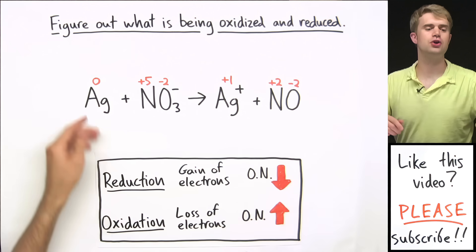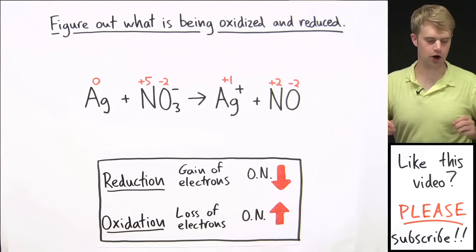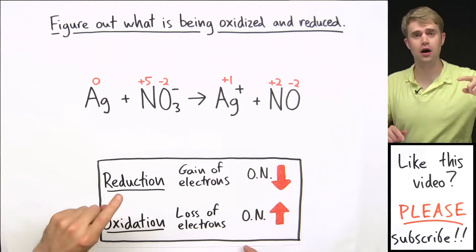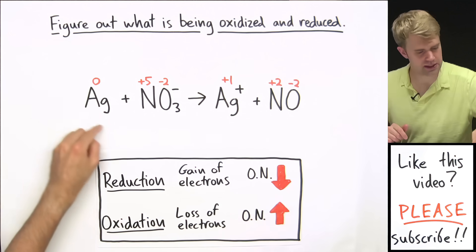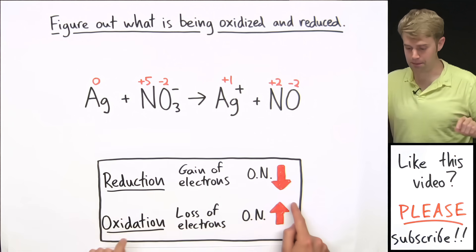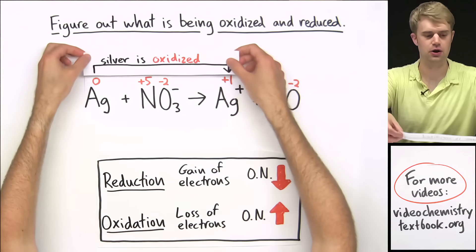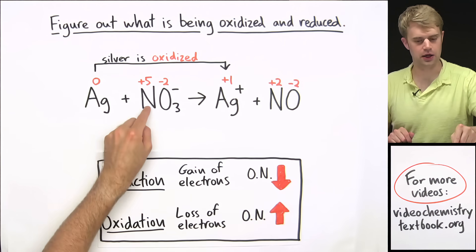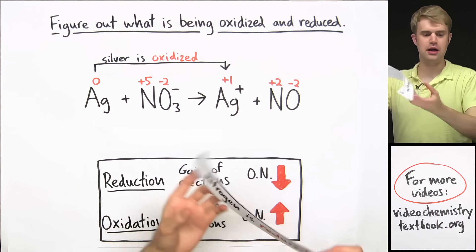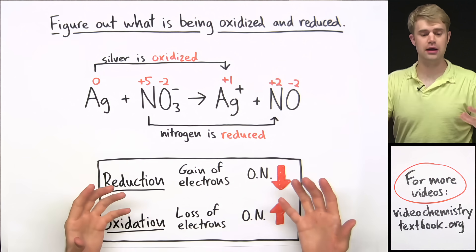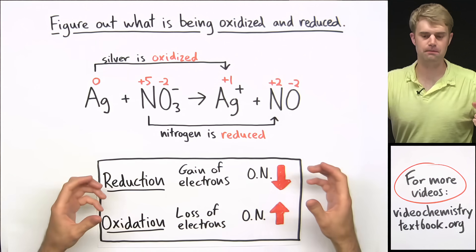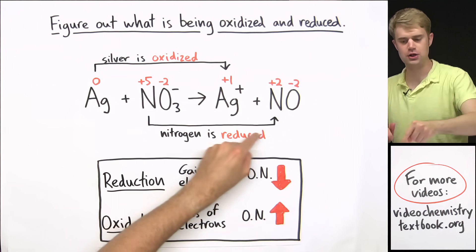Now that we've determined the oxidation numbers, we can figure out what's being oxidized and what's being reduced. Reduction is a gain of electrons and causes the oxidation number to go down; oxidation is a loss of electrons and causes the oxidation number to go up. Silver starts at zero and becomes plus one — its oxidation number is going up, so silver is being oxidized. Nitrogen is plus five on the reactant side and plus two on the product side — its oxidation number is going down, so nitrogen is being reduced. Oxygen stays at minus two on both sides, so nothing is happening to oxygen.